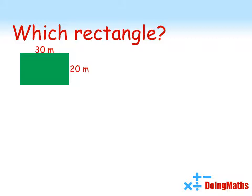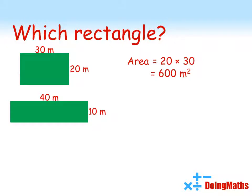If he created an enclosure of 30 metres by 20 metres, the area would be 20 times 30, which is 600 square metres. The longer, thinner enclosure would have an area of 10 times 40, which is 400 square metres. So far, the 20 by 30 rectangle has the largest area.